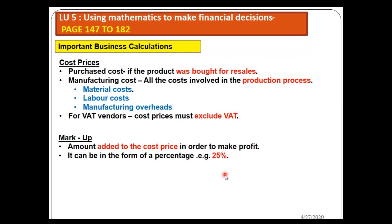If you are in business, your main aim is to make profit, which means you need to mark up the cost price. If you bought something for 50 rands you cannot sell it for 50 rands — you are not running a charity organization. Mark up is essentially the profit you are going to make on that particular product; it is the amount added to the cost price in order to make a profit.